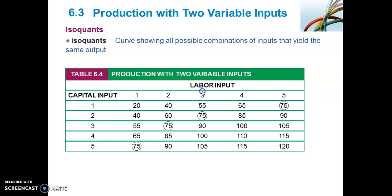Similarly, if we keep labour constant at three units but allow capital to increase by one unit each time, we see that the marginal product of capital also diminishes. Output increases each time capital is added, but the increase diminishes: it first increased by 20 when capital went from one to two units, then by 15 when capital increased from two to three units, and so forth. This is an important concept to consider.